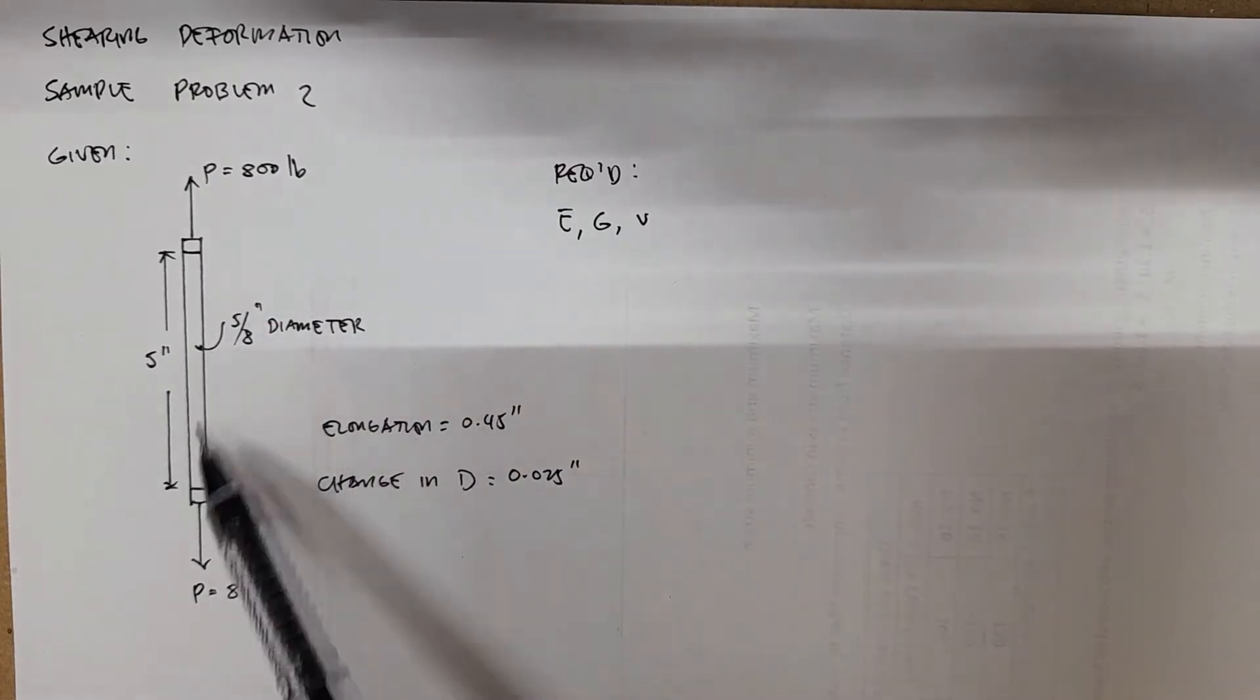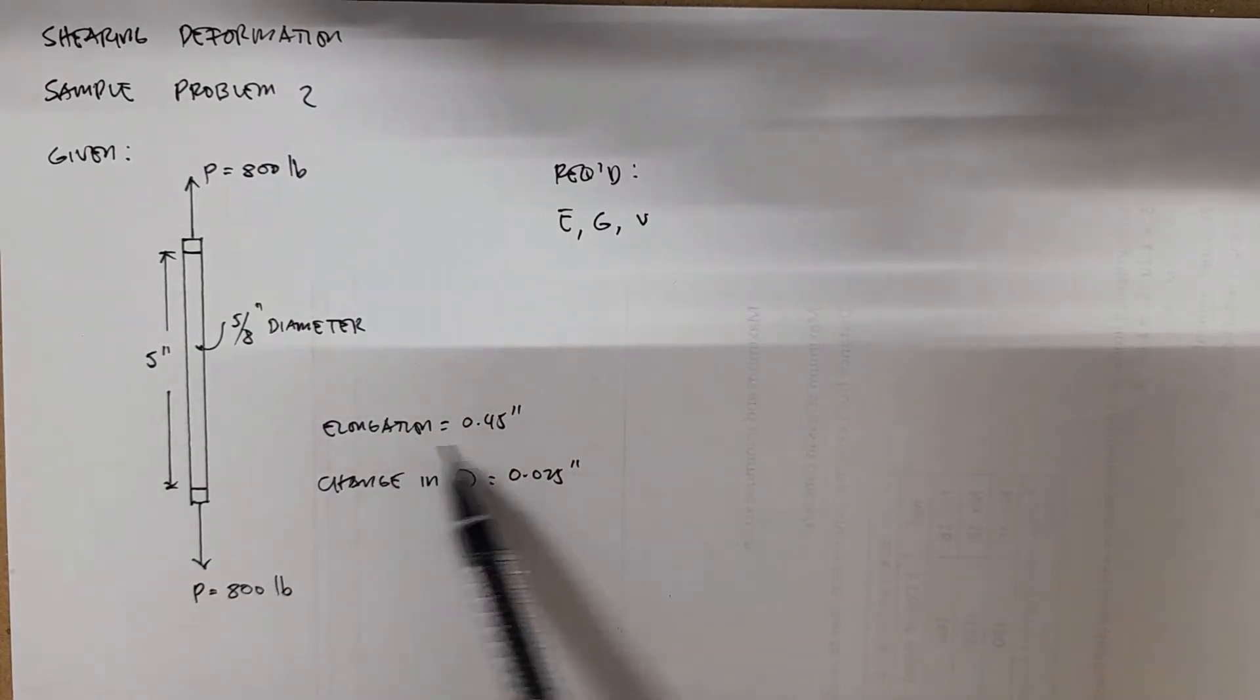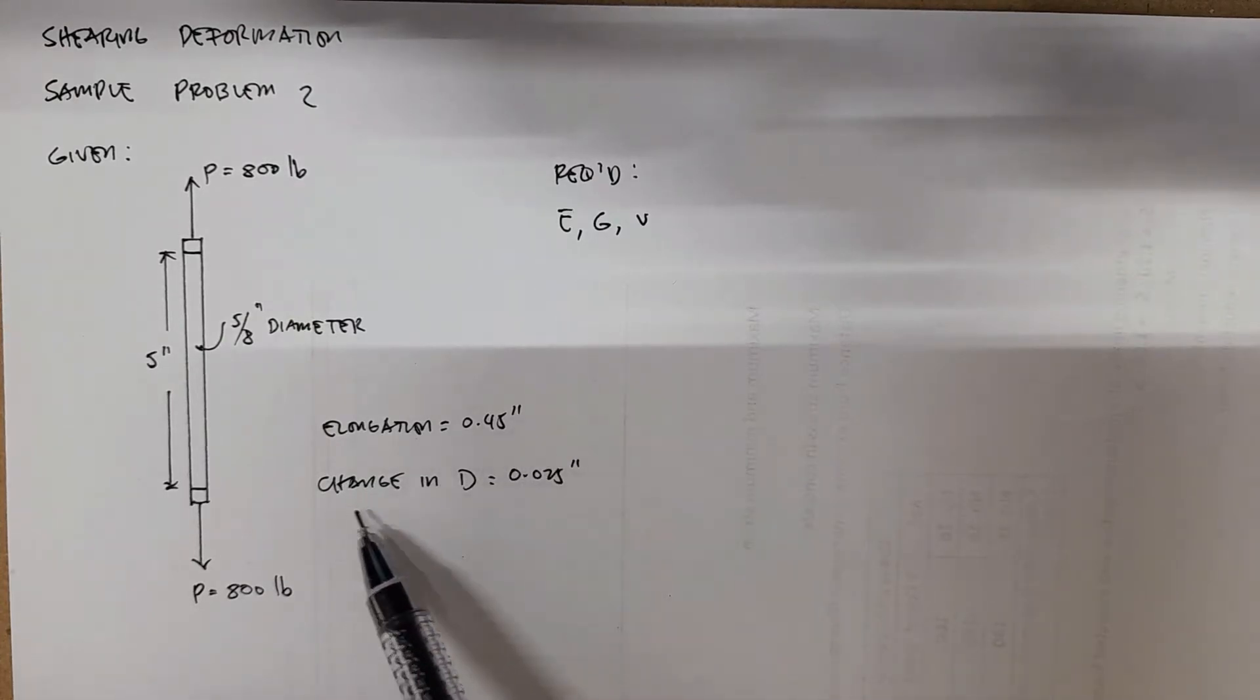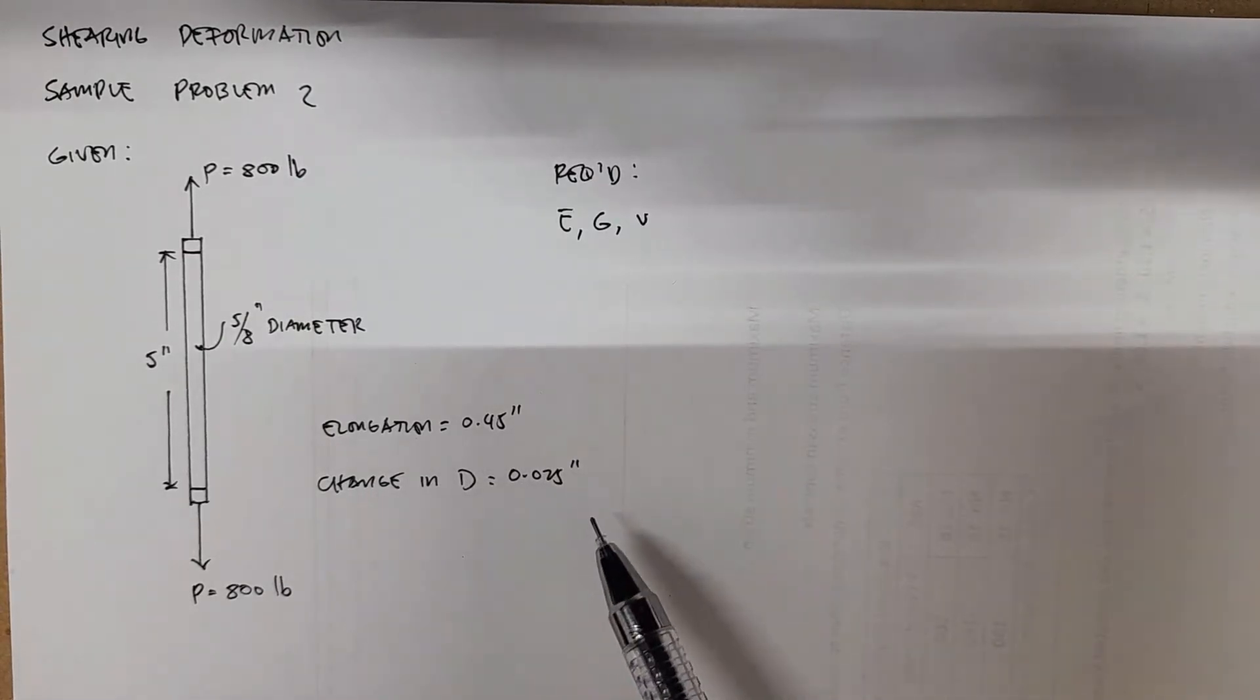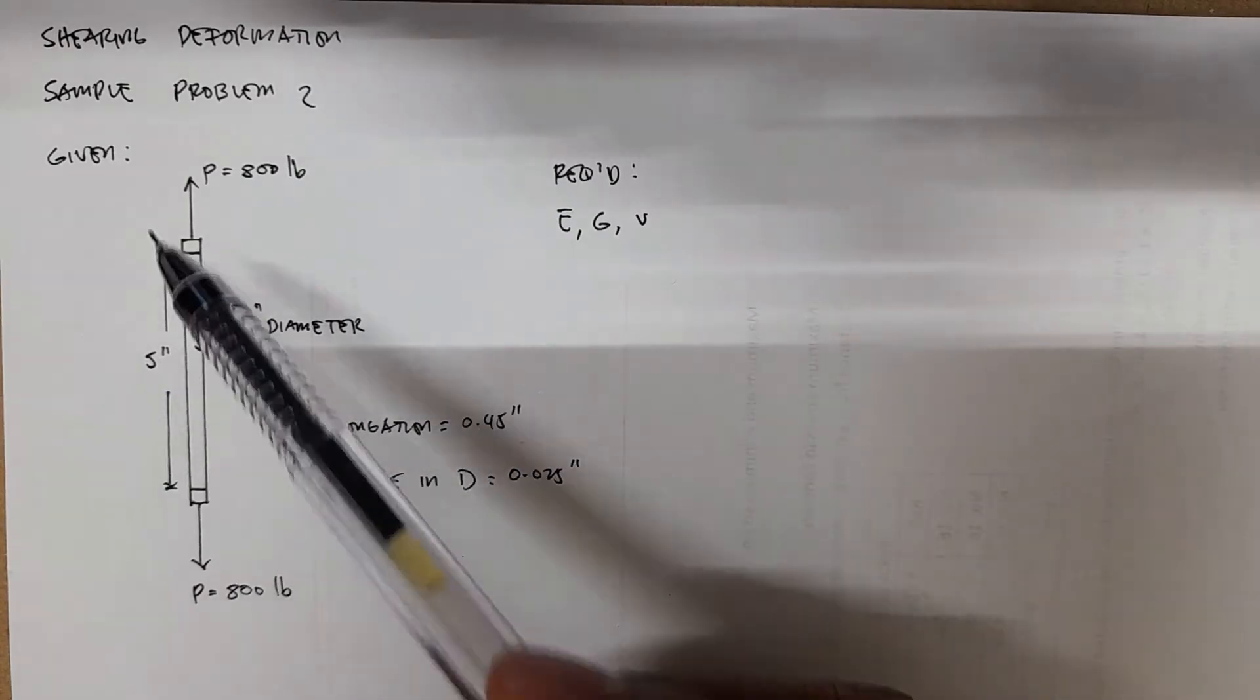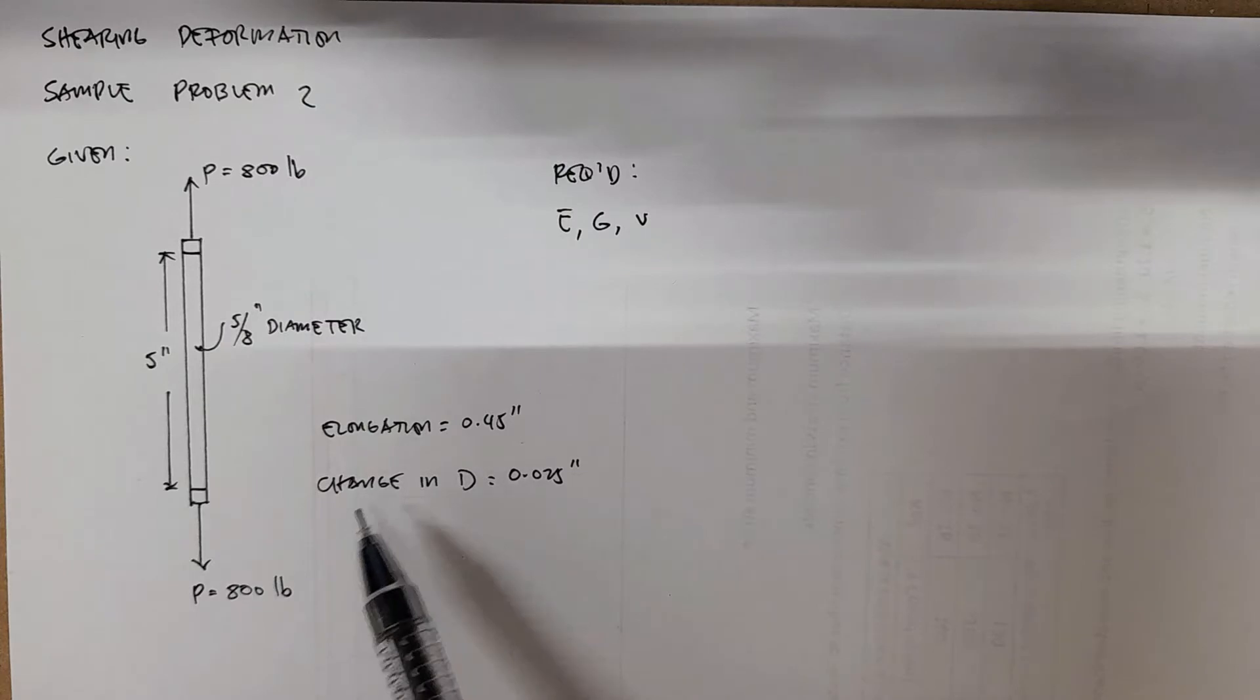This particular rod is stretched along the y direction. We have the given elongation which is 0.45 inches, then we have the change in diameter 0.025 inch.